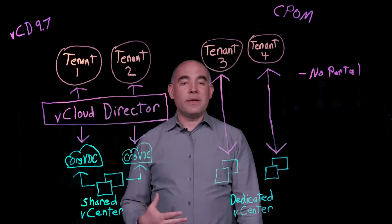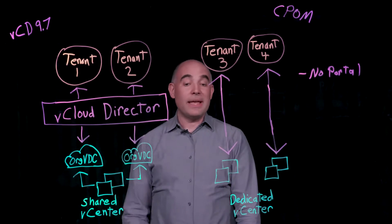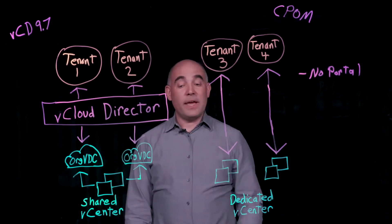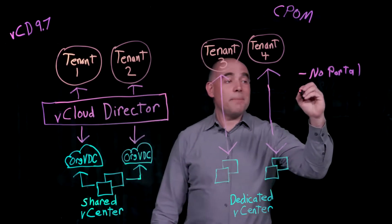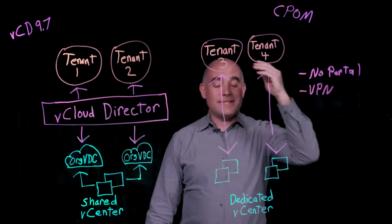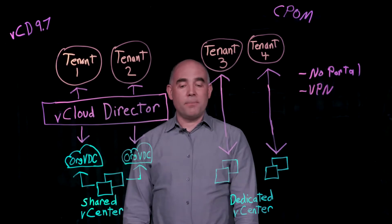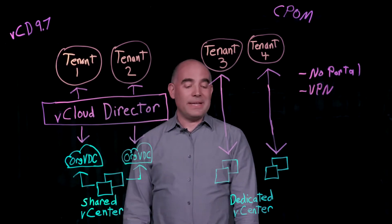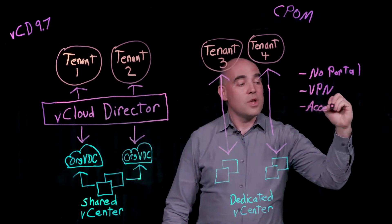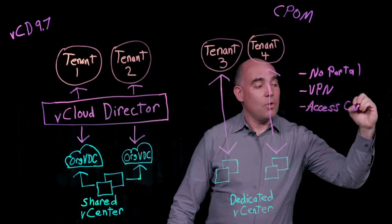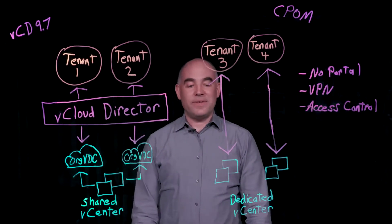There's also no opportunity for a branded, customized experience for tenants consuming these cloud resources. And of course, the vSphere web UI typically wouldn't be offered on the public internet, so a VPN is necessary for tenants to access these dedicated vCenters — which can be a cumbersome solution to set up and maintain. Finally, there are limited access control options for the cloud service provider to control which users can access which resources on these dedicated vCenters.